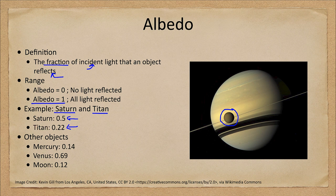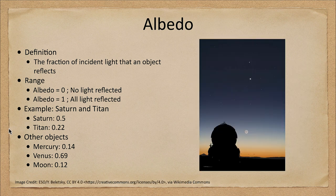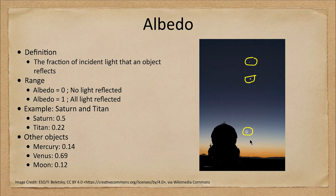Now let's look at a few other objects. This image shows three different objects: in the middle is the planet Venus, above that is the planet Mercury, and below we see the Moon. You'll note that the Moon is not very bright because it's a crescent moon — only that small portion is actually illuminated.